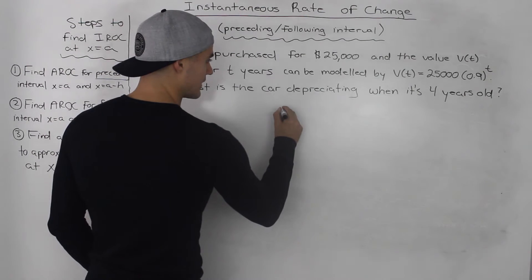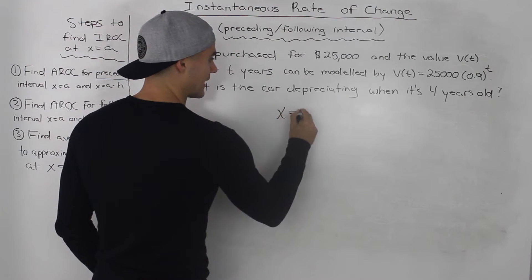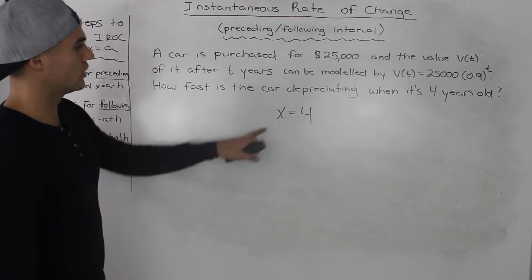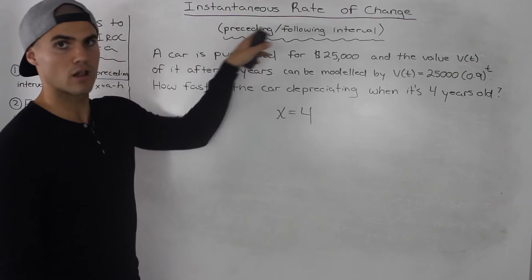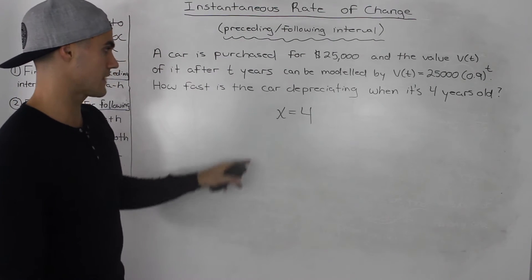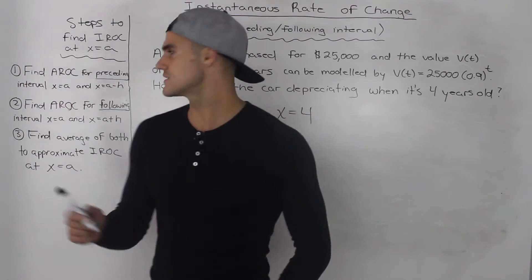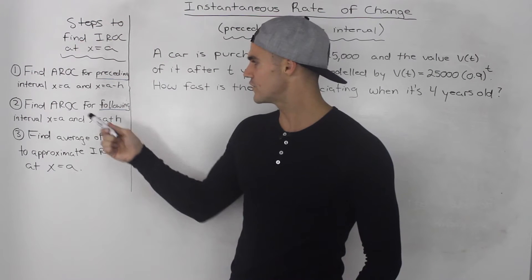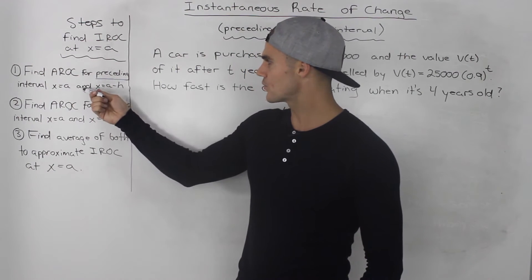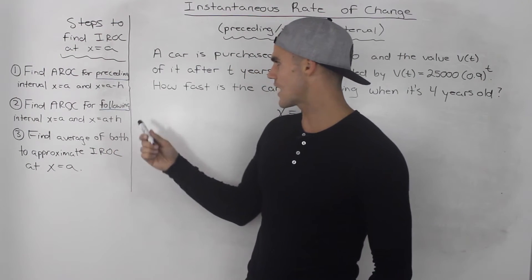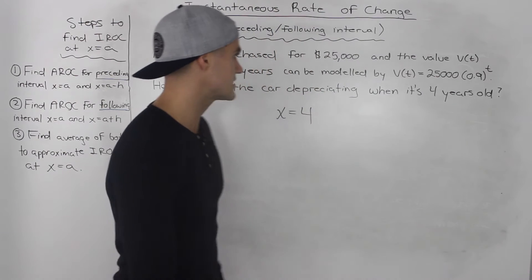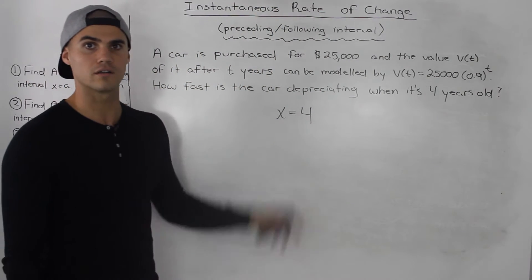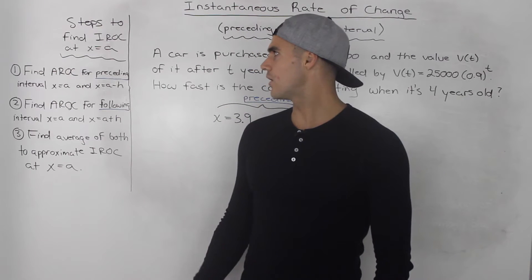We need to find the instantaneous rate of change at an x value of 4. We're going to do that using the preceding-following interval method. I have the steps listed out over here from the previous overview video of the method. We're simply going to follow these three steps to find the instantaneous rate of change of the car depreciating at four years.